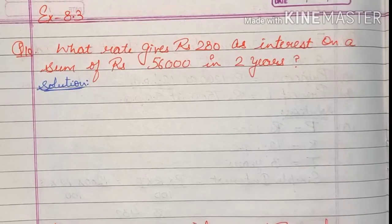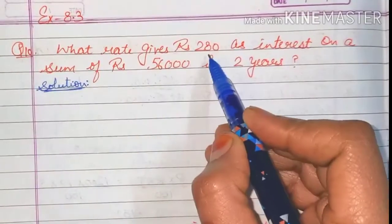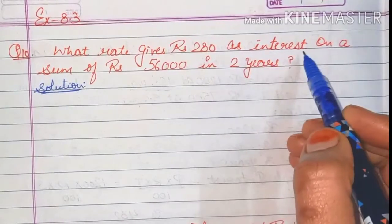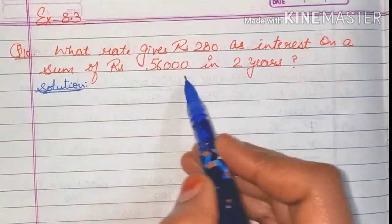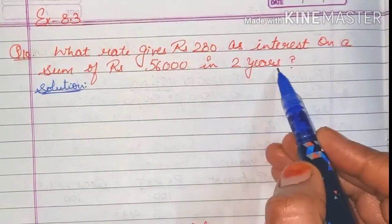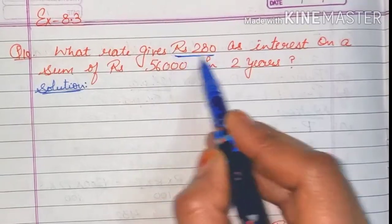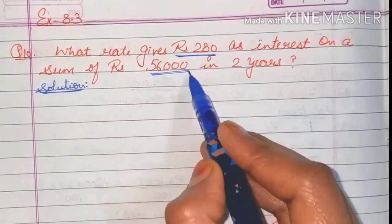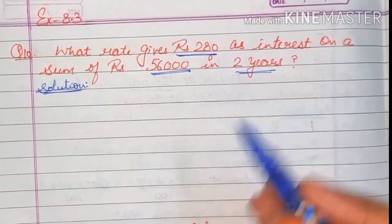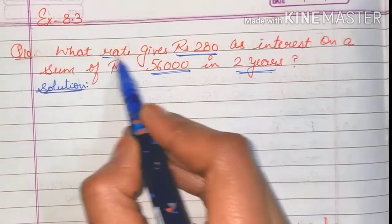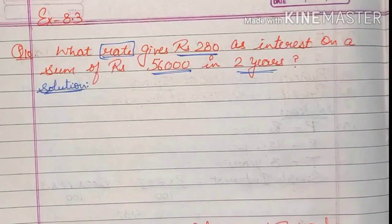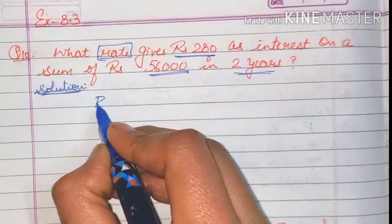Let's come to question number 10. What rate gives rupees 280 as interest on a sum of rupees 56,000 in two years? So this is interest and this is the principal. Time period is given. What we are not given is the rate, so we are to find at what rate.